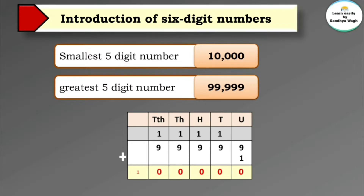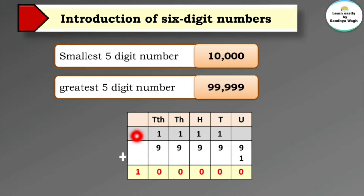We don't take that carry further — we write one next to the zeros. Now look at the places: units place, tens place, hundreds place, thousands place, ten thousands place. A new place has come — where we wrote the one — that is the lakhs place. So this number is one lakh, and one lakh is a six digit number.